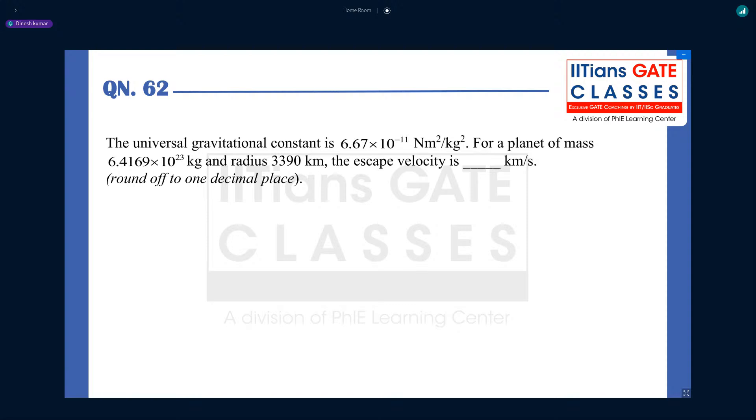Now let's move to next question. This is one of the very easy questions and it is usually covered by everyone, whoever covers space dynamics. This is an NAT question and it is for two marks. The universal gravitational constant is given as 6.67 times 10 to the power minus 11 Newton meter square per kg square. For a planet of mass 6.4169 times 10 to the power 23 kg and radius 3390 km, the escape velocity is in km per second.